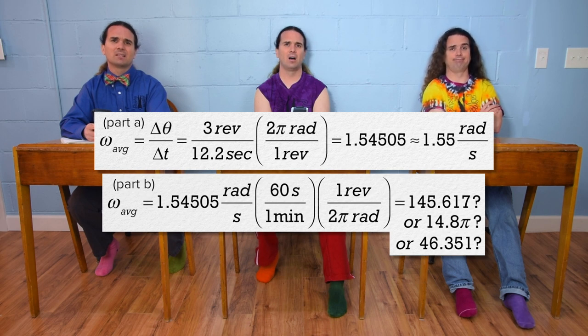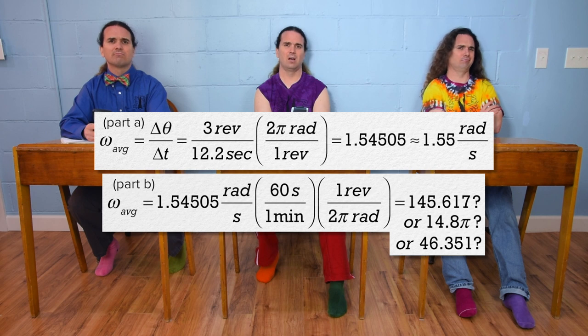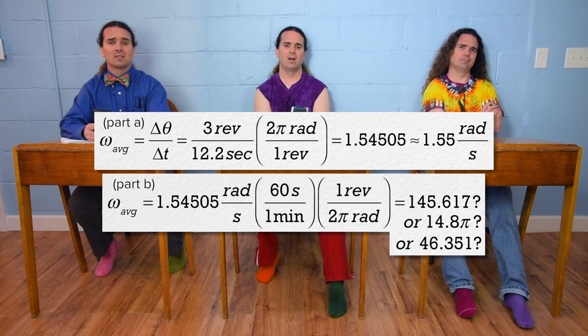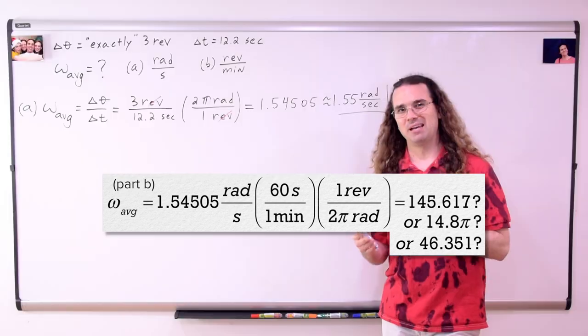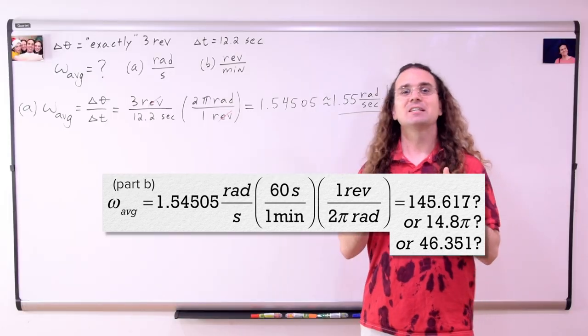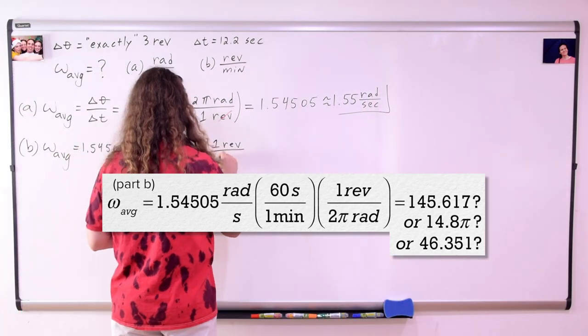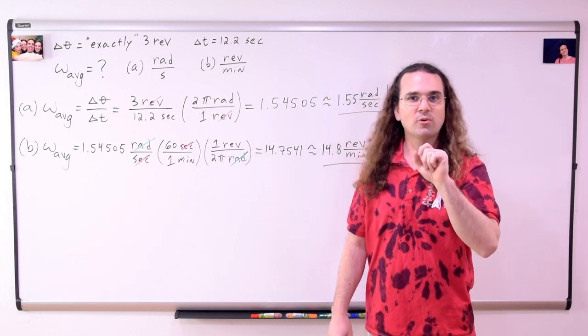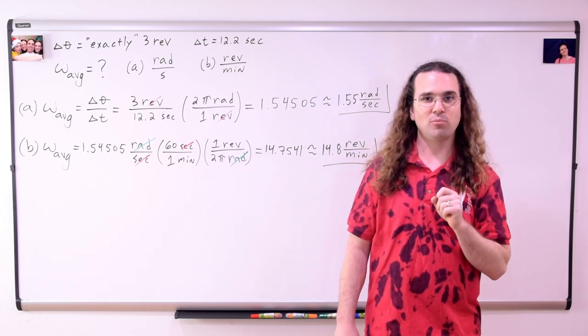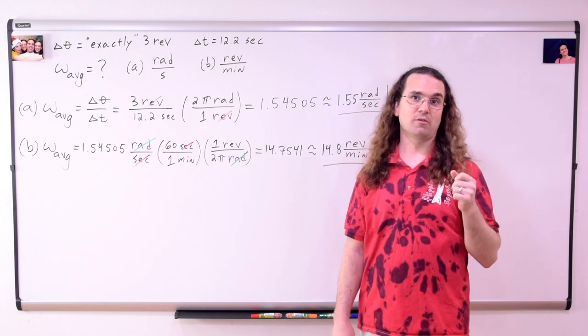Unfortunately, you are all wrong. There are three common mistakes when converting from radians per second to revolutions per minute, and you each made one of them. Before we discuss your mistakes, let's get the correct solution on the board. When we do this correctly, the answer is 14.8 revolutions per minute.